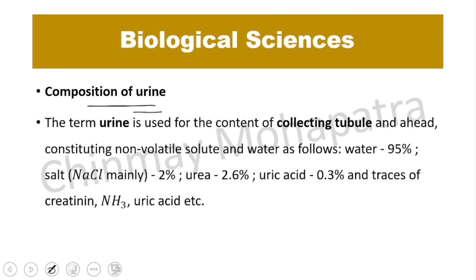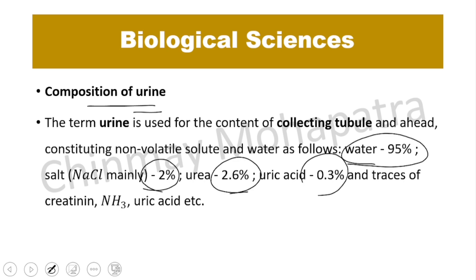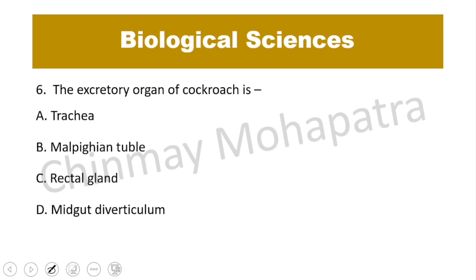Composition of urine: water 95%, salt 2%, urea 2.6%, uric acid 0.3%, and other substances including creatinine, NH3, and uric acid.